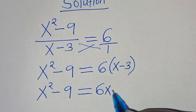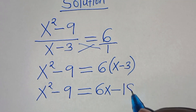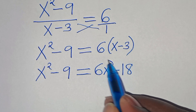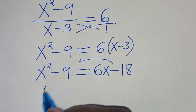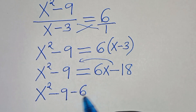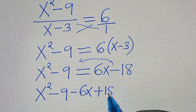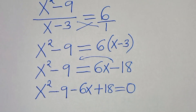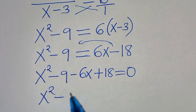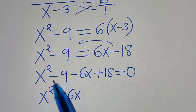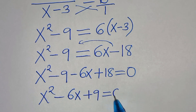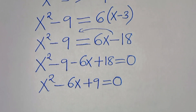Expanding: 6 times x is 6x, then minus 6 times minus 3 is minus 18, giving 6x minus 18. Taking 6x minus 18 to the left hand side, we have x squared minus 9 minus 6x plus 18 equals 0. Simplifying: x squared minus 6x, then minus 9 plus 18 is plus 9, equals 0.